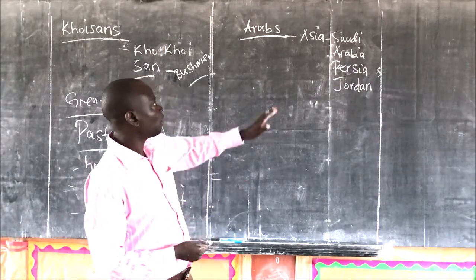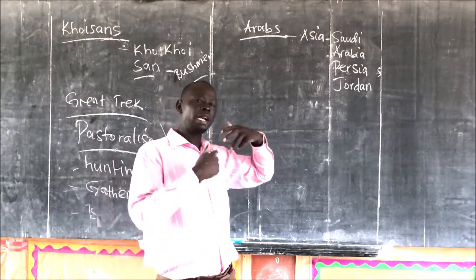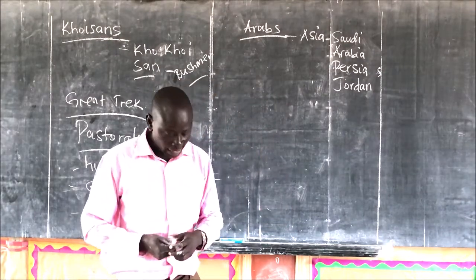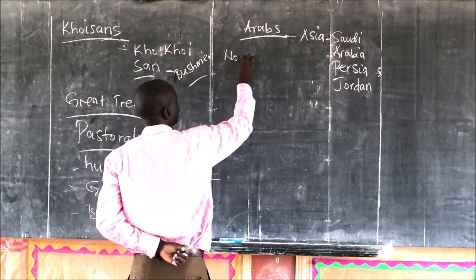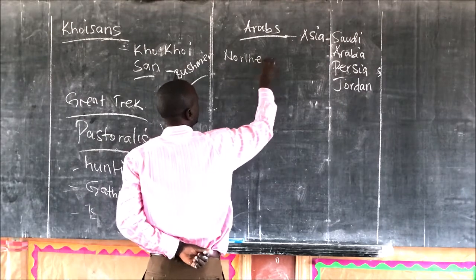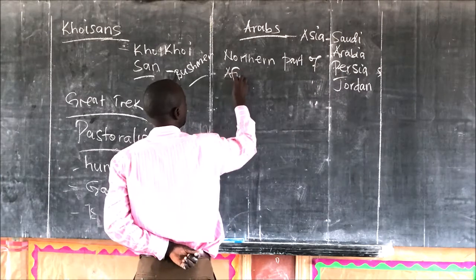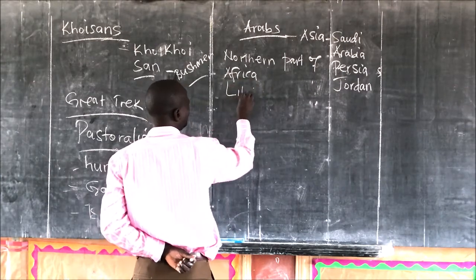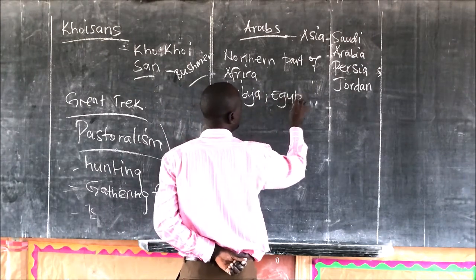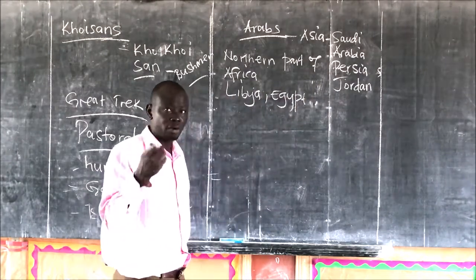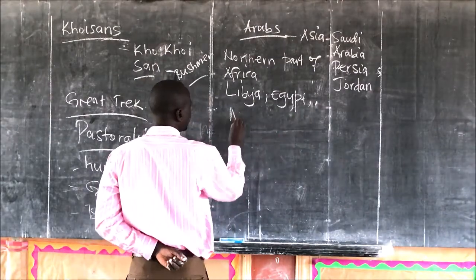The main purpose why many of them came was to carry out trade, and that is why when the Arabs came the slave trade also started. The Arabs mainly inhabit the northern part of Africa. When you look at countries in the northern part of Africa — countries like Libya, Egypt, and Morocco — those are countries identified with the Arabs.